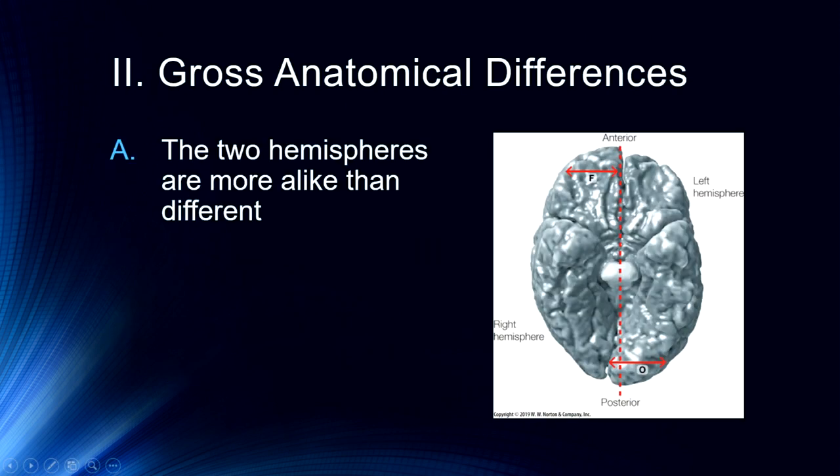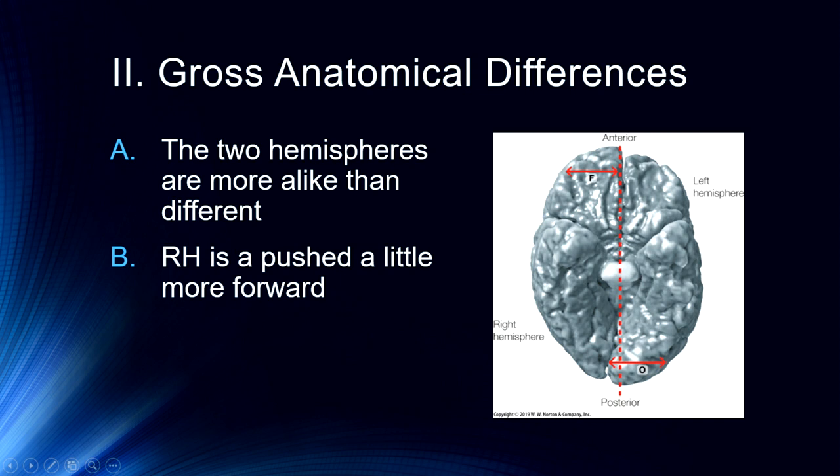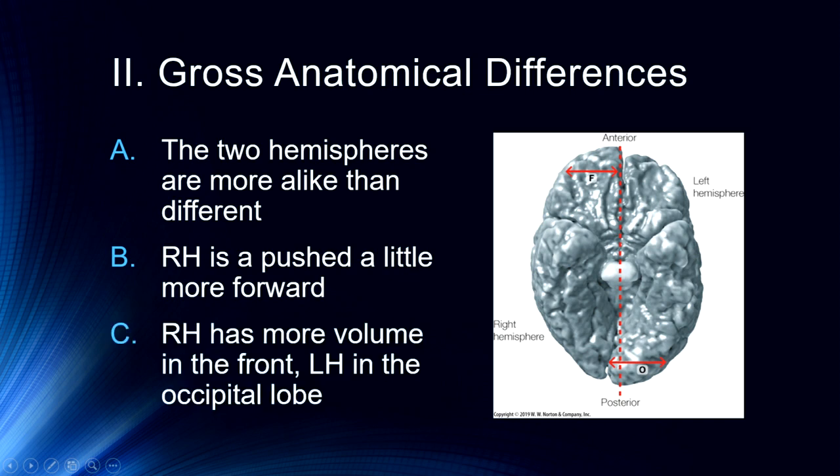So let's get into what is different about the left and right hemispheres. They're more alike than not, so a lot of this is much ado about very little, which is important for you to understand. The right hemisphere is pushed a little bit more forward, a little bit more anterior. This particular view is exaggerated in some of its aspects just to give you a clearer idea, but the right hemisphere is indeed a little bit more anterior. The right hemisphere has more volume in the frontal lobe areas, and the left hemisphere has more volume in the occipital lobe.